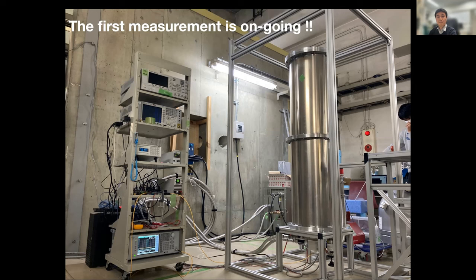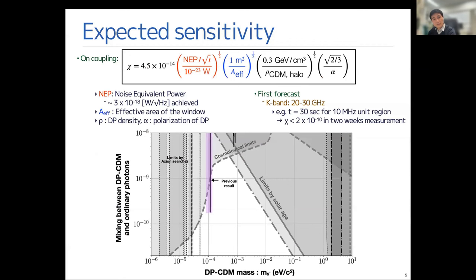This time I'd like to show expected sensitivity. The expected sensitivity for the coupling constant chi is expressed in this equation, parameterized with the noise power and the measurement time and the opening angle of the window, and of course, the density of the dark matter itself.